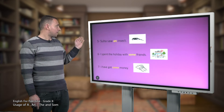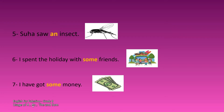Number five: Suha saw an insect. Notice the indefinite article 'an' is followed by the noun 'insect', which is a singular noun. When we want to use a and an, we should follow them by singular nouns, not plural nouns. And notice, 'insect' starts with a vowel sound — that's why it should be preceded by 'an', not 'a'.